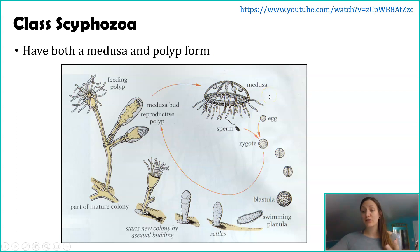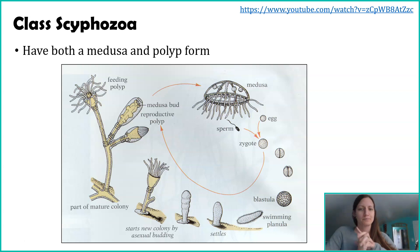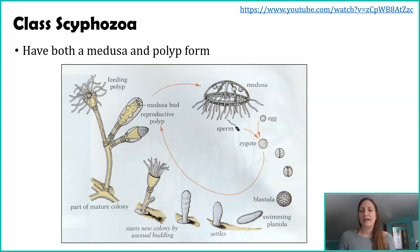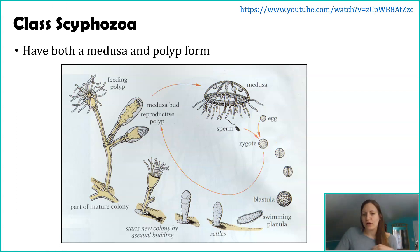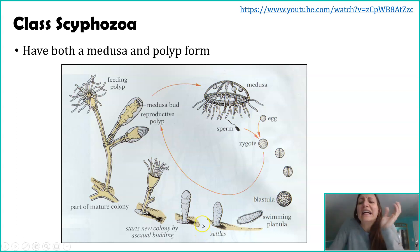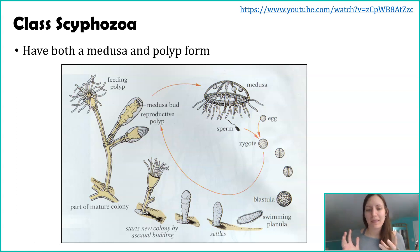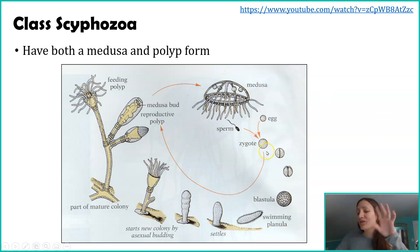Here is the jellyfish — the medusa form, which is the adult. There are male and female jellyfish; they make egg and sperm, the gametes are haploid, and egg and sperm come together to create a fertilized egg, or zygote. The zygote starts dividing, then lands somewhere — on the ocean floor, on a rock, or on some sand — and starts growing into a polyp. Here's the adult, here are egg and sperm, they create a zygote, and the zygote grows and develops into a polyp.